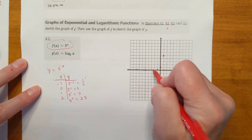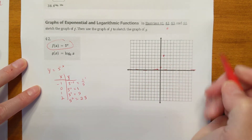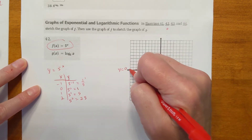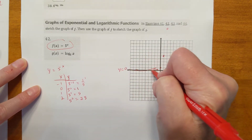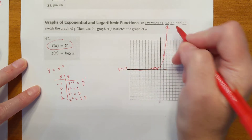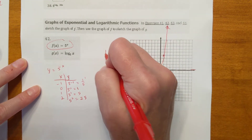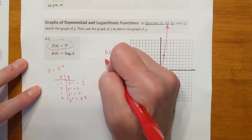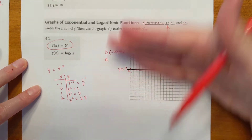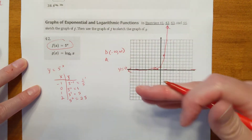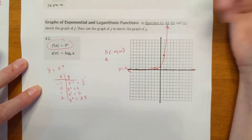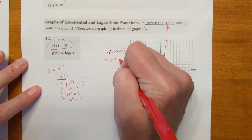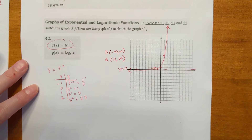We've got the horizontal asymptote y equals 0. The domain is infinite — it goes forever left and right. The range, however, is not forever up and down. It starts approaching 0 but never crosses it, so we use a parenthesis: 0 to infinity.